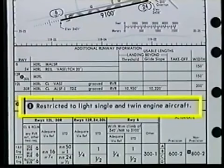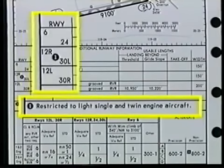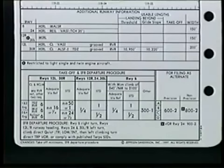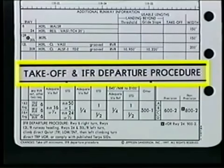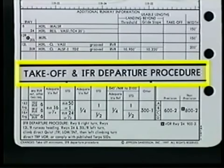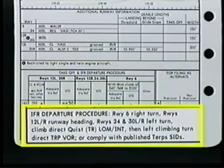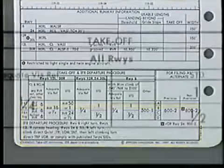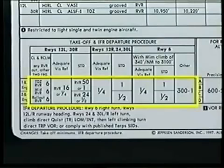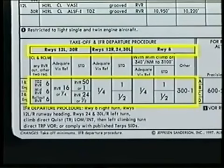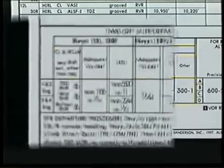The bottom portion of this section identifies special runway information. This information is noted by ball flags in the runway column. The last section of the airport chart shows takeoff and alternate minimums. The title takeoff and IFR departure procedure is used to indicate that both takeoff minimums and IFR departure procedures are specified. The specific departure procedure for each appropriate runway is contained in a textual format. Within this section, the standard and lower than standard takeoff minimums for individual runways or groupings of runways are shown for commercial operators and air carriers.